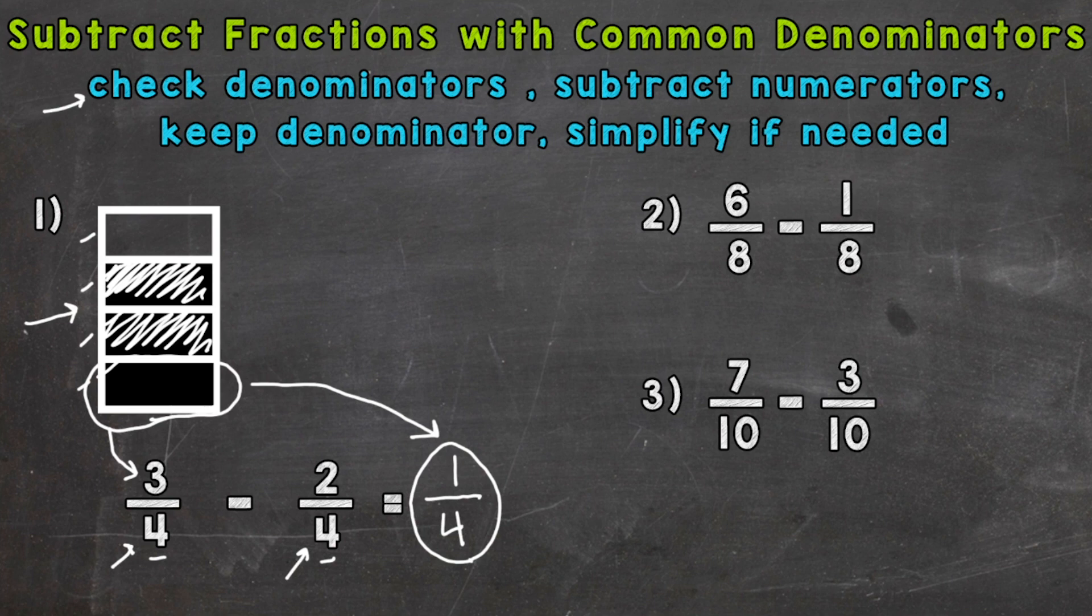Now we can subtract the numerators. Six minus one is five. We keep our denominator of eight the same, and then we simplify if needed. Five eighths is in simplest form. The only common factor between five and eight is one, so we are done.